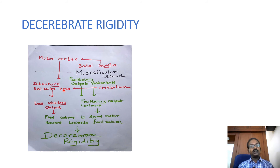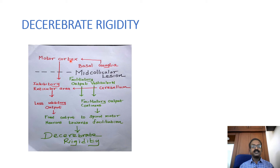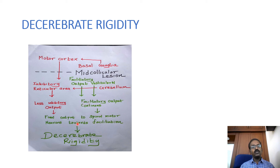This flowchart depicts the mechanism of decerebrate rigidity. The smaller inhibitory reticular area is controlled by the basal ganglia, motor cortex, and cerebellum. Basal ganglia cannot directly control the medullary reticular area; instead, basal ganglia send impulses to the motor cortex, and cortical fibers control the inhibitory reticular area. Due to the mid-collicular lesion, less inhibitory output occurs. Finally, the facilitatory output from the pontine reticular area and vestibular nucleus increases. The facilitatory output continues, and the final output of the spinal motor neuron pool is increased, producing decerebrate rigidity through increased motor neuron activity. This is mainly due to increased activity of the stretch reflex.